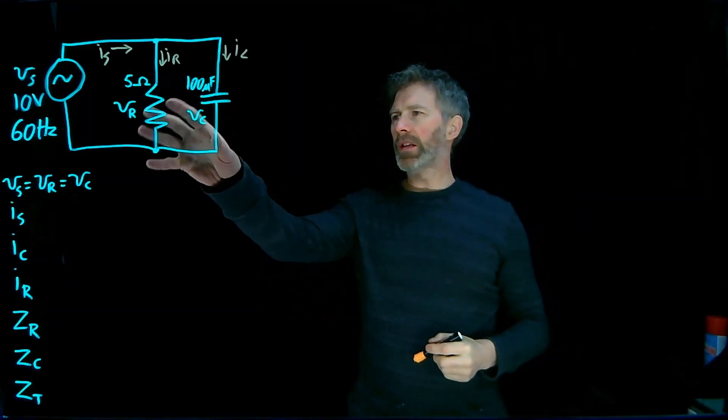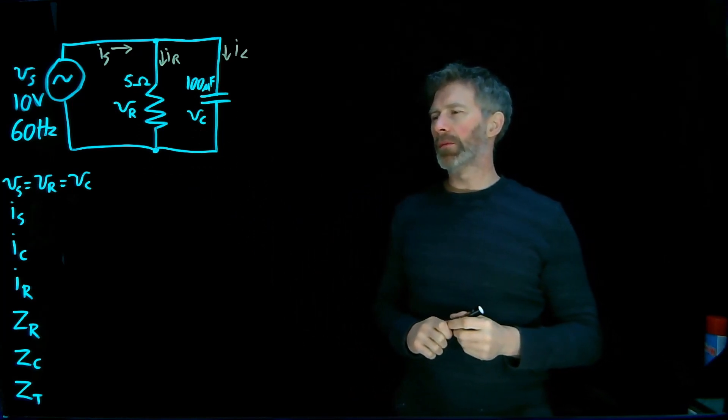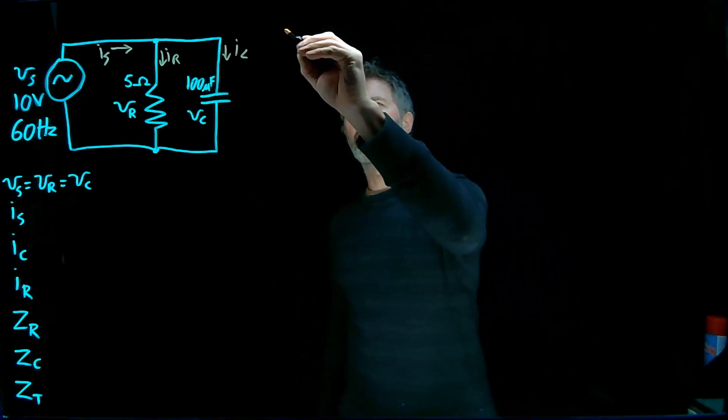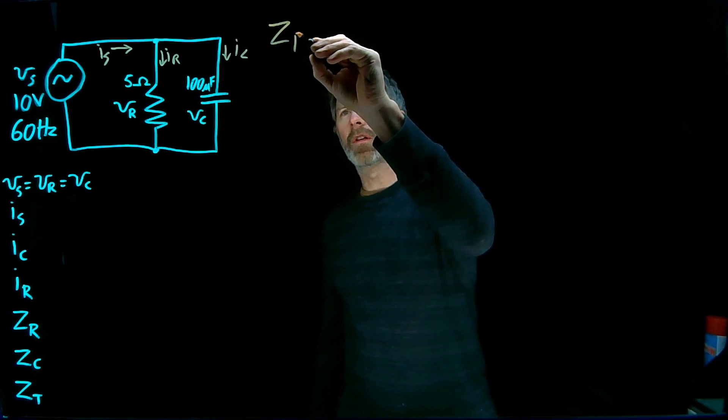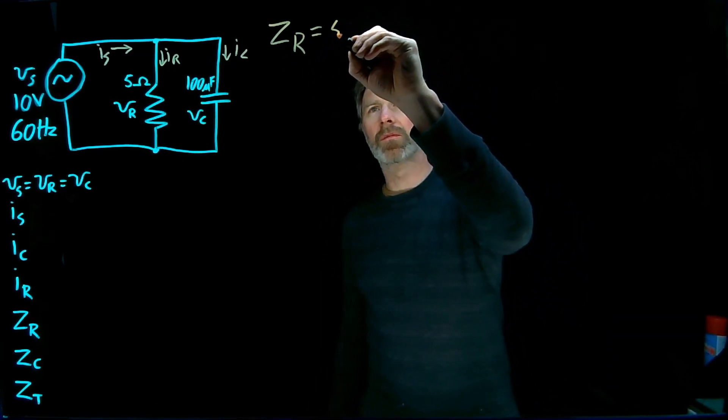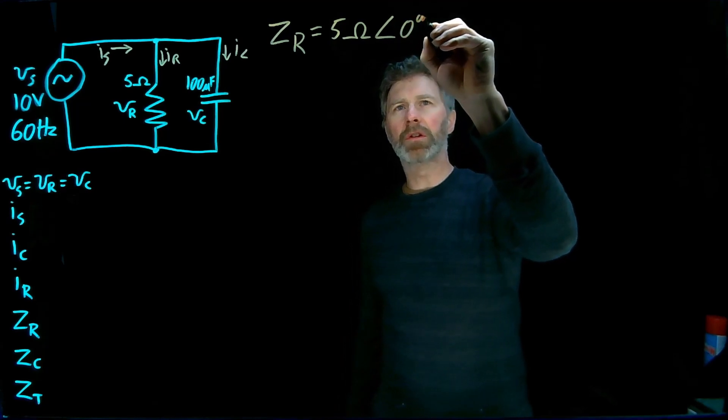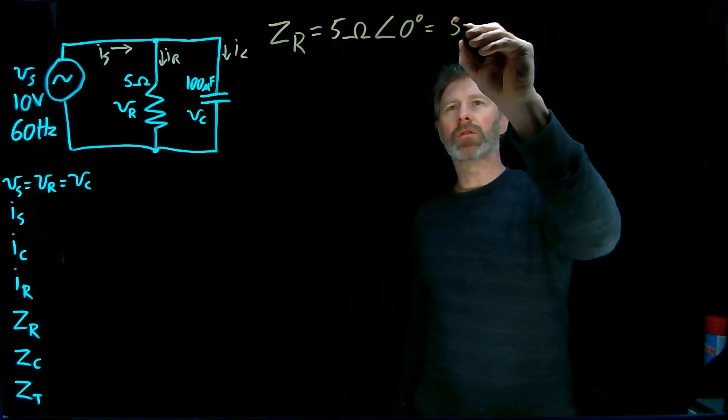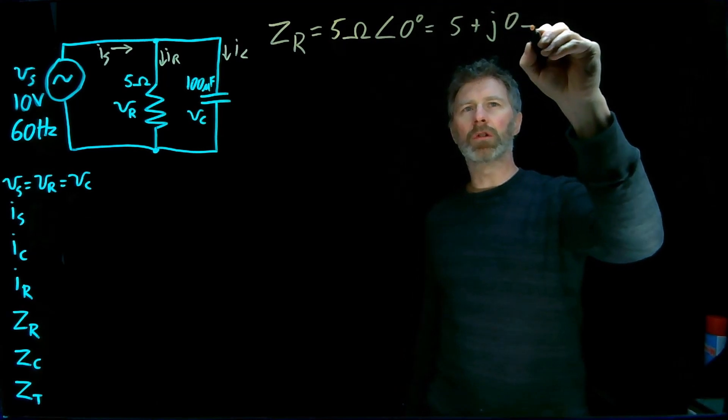To start off with, let's take a look at the impedances of these two components, the resistor and the capacitor. The impedance of the resistor is simply 5 Ohms with a phase angle of zero degrees, which in rectangular coordinates is 5 + j0 Ohms.